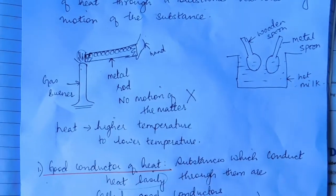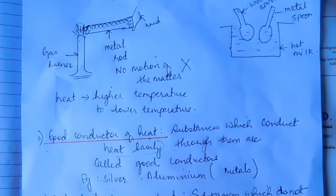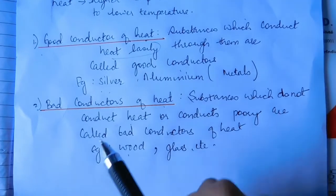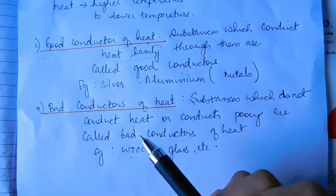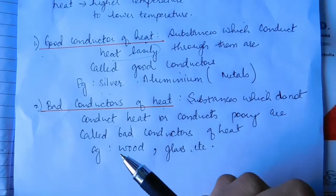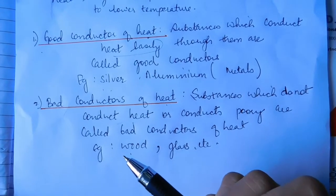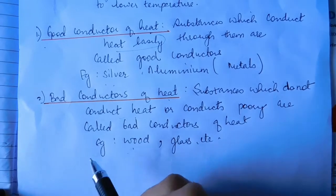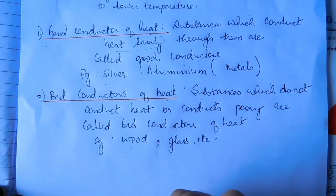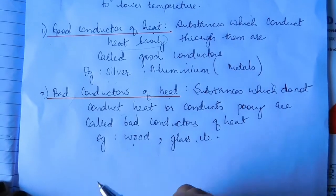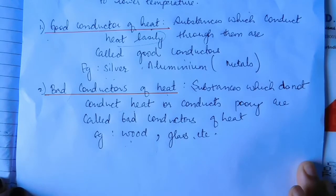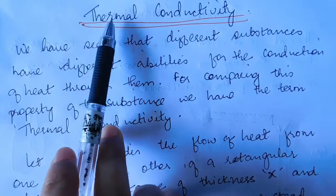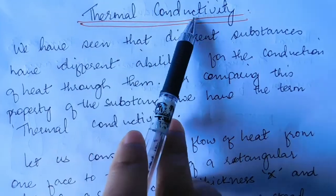In conclusion, different substances conduct heat to different degrees — they have different abilities for conduction of heat. To compare this property of substances, we use a term called thermal conductivity, or the coefficient of thermal conductivity.